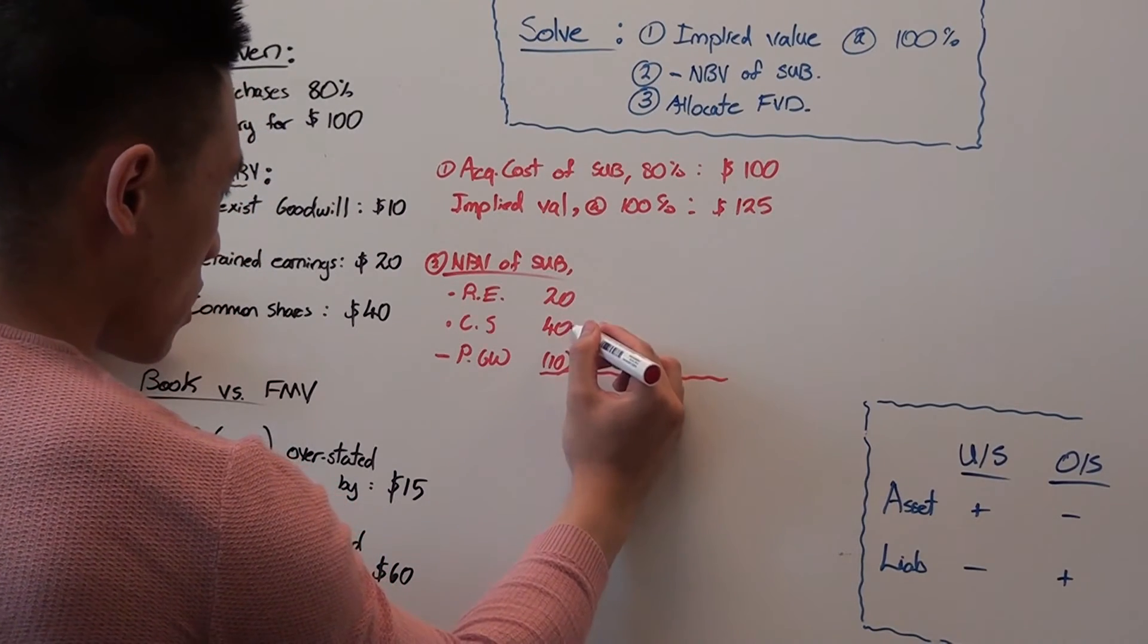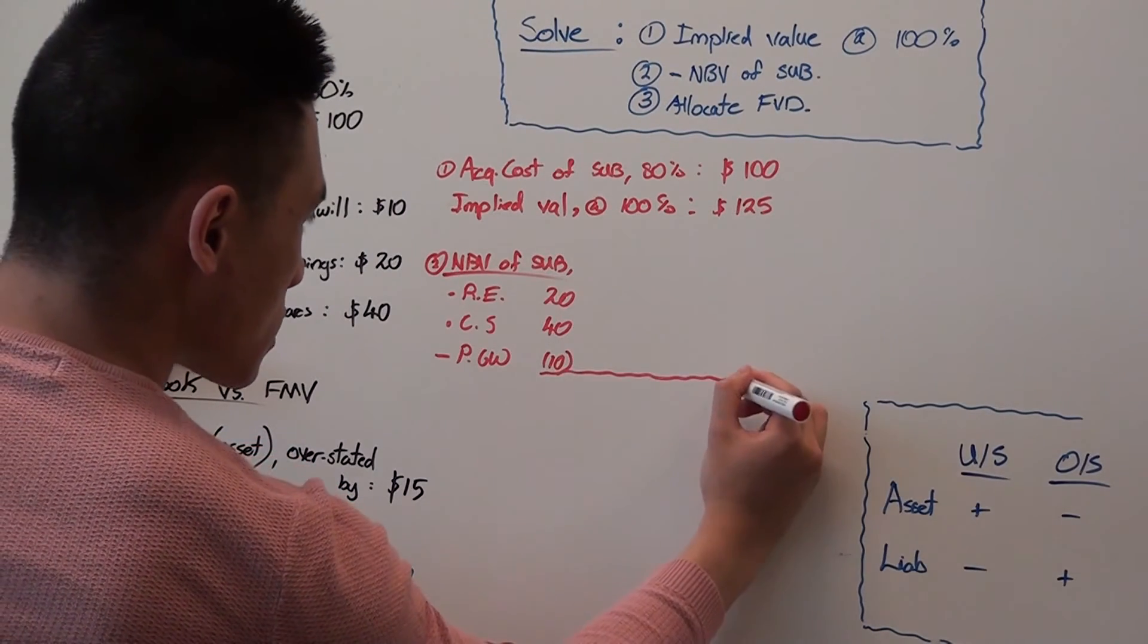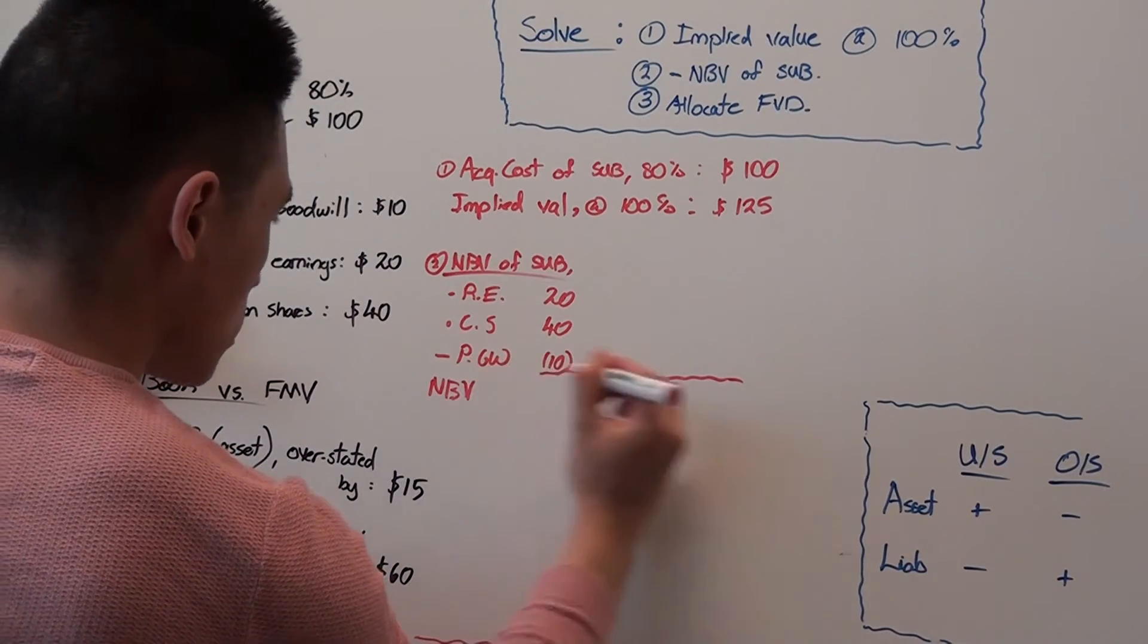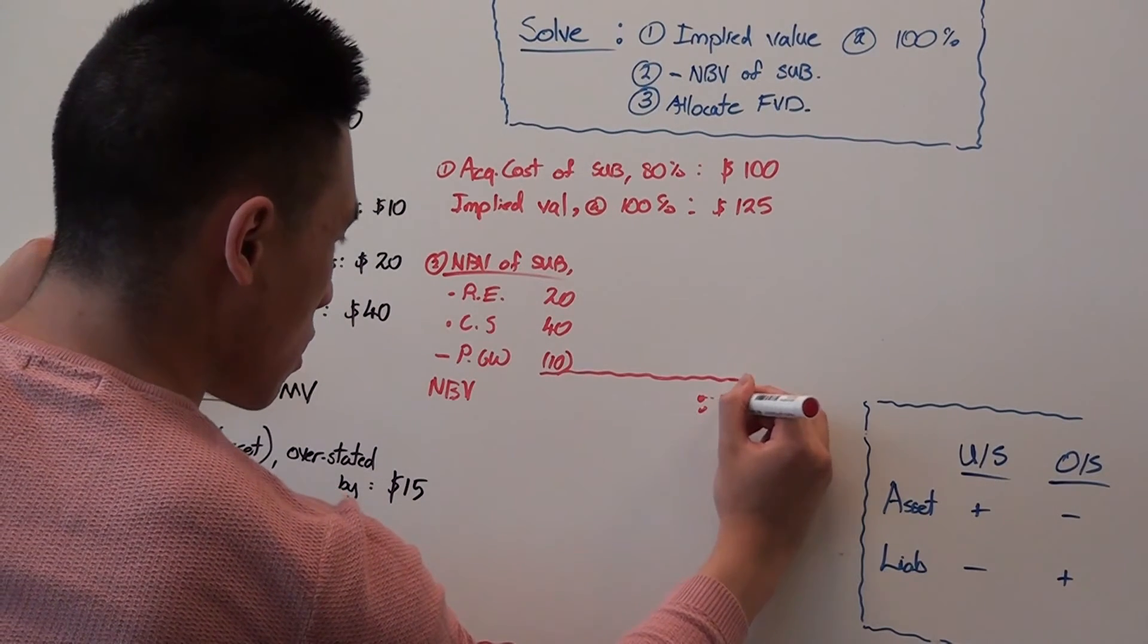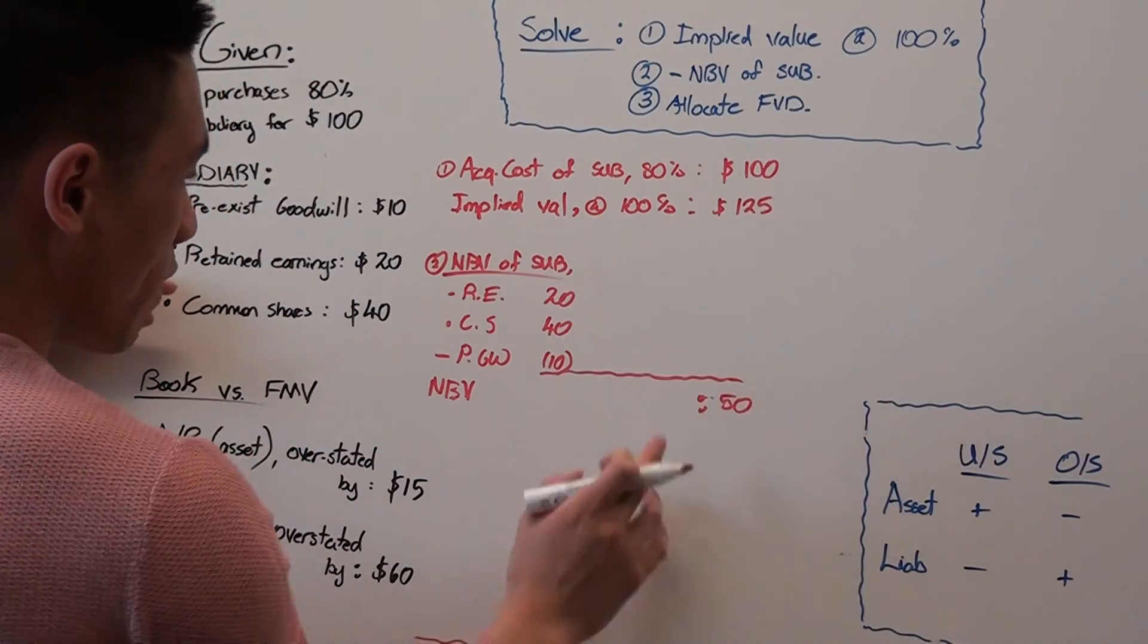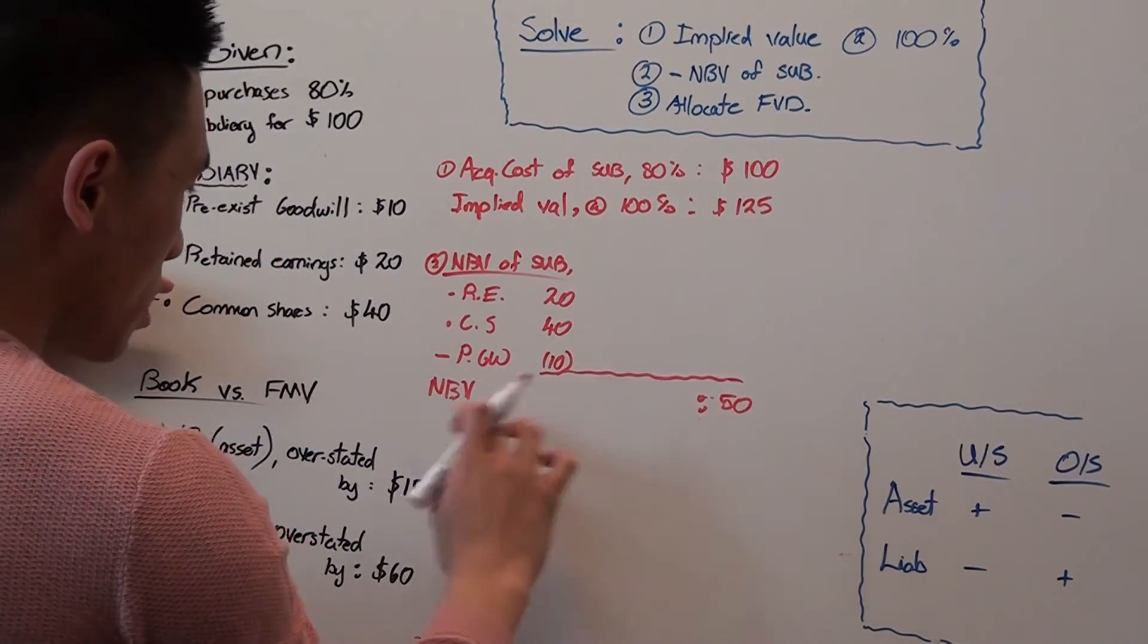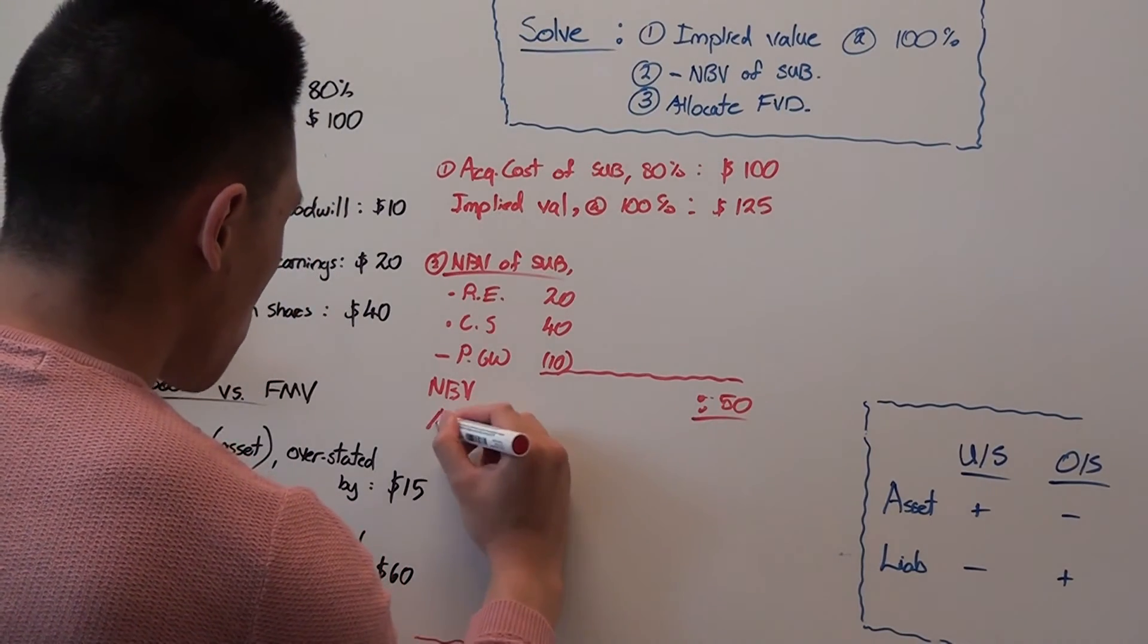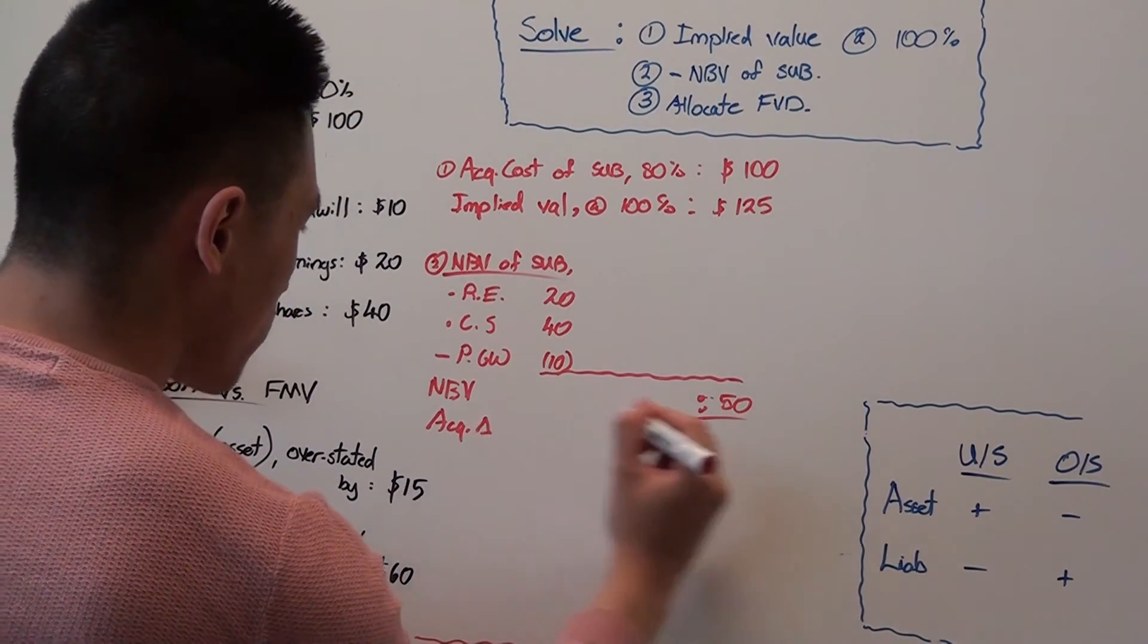So this gives us a netbook value of 50. And then if we take the implied value of 125 and then we subtract the netbook value of 50, we have acquisition differential of 75.